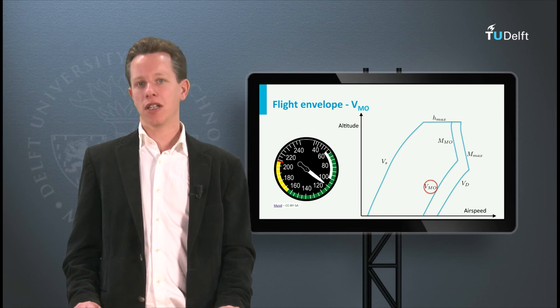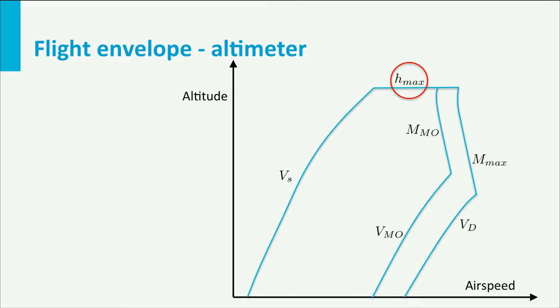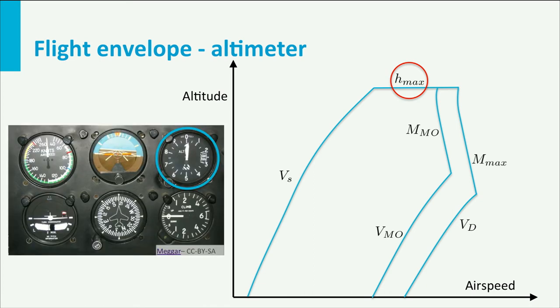The maximum altitude indicated in the flight envelope can also be easily determined. This works as follows. The altimeter is one of the six basic instruments connected to the static port. On the inside of this instrument there is a membrane which will expand to a certain level based on the static pressure inside the box. The expansion of the membrane is a measure of the altitude.